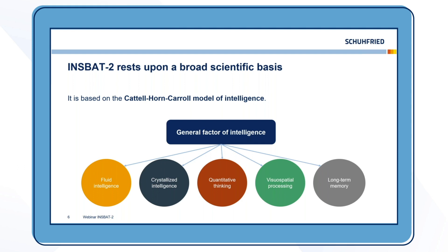For example, we have fluid intelligence, which has multiple tests for logical reasoning, or crystallized intelligence, which is acquired knowledge and text comprehension as an example. Furthermore, we have quantitative thinking, which is mostly math, and then visual spatial processing and long-term memory.